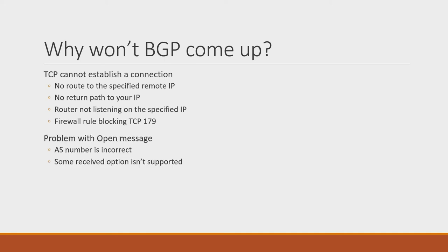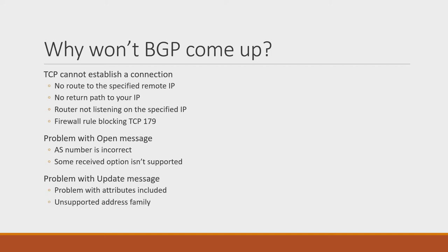Assuming TCP is working, there could be some problem with the open message — perhaps a typo in the autonomous system number, or your router is configured with options the remote end doesn't support. These problems are easier to diagnose, as a notification message will be sent back to the offending router explaining what's wrong. There may also be a problem with an update that's sent or received — maybe attributes are specified incorrectly, or you see information for an address family that isn't supported by the session. These problems will also cause a notification to be sent, typically logged by both sides.